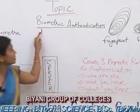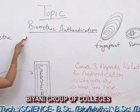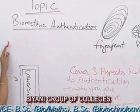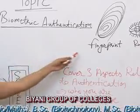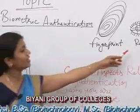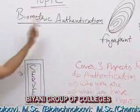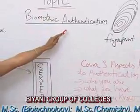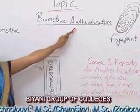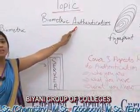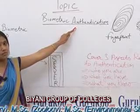The term biometric refers to the physical characteristic of the user such as fingerprint, retina, and iris. The term authentication refers to the act of confirming the user is an authentic person.